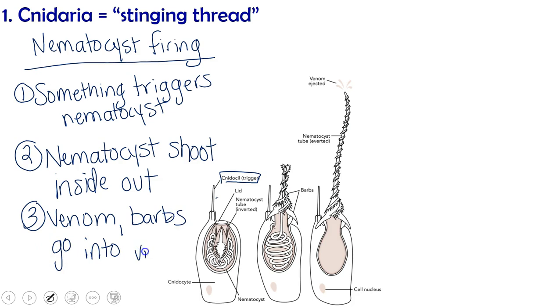So what do cnidarians use these nematocysts for? Well, unsurprisingly, they use them to capture prey and they use them to defend themselves against predators.